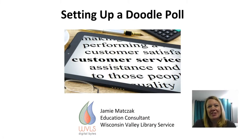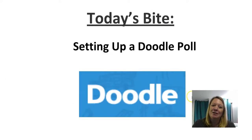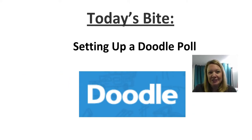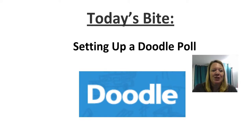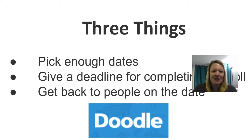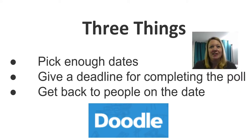Hello, I'm Jamie Maciek with the Wisconsin Valley Library Service and welcome to our Digital Byte. For the Byte this week, we're going to talk about how to set up a Doodle poll. Many of you have probably completed a Doodle poll either for a meeting or maybe a colleague needed an opinion on something and they used Doodle as a method to do that. Before we go to the website, there are three things I want to talk about that I'd like you to keep in mind when you're setting up a poll.